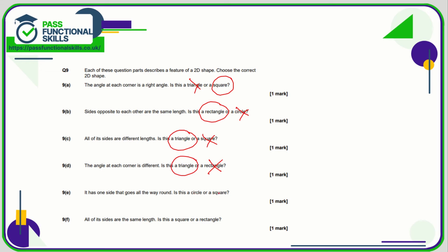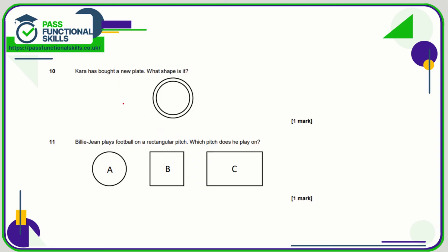It has one side that goes all the way around — circle or square? A square has four sides, so it's a circle. All sides are the same length — square or rectangle? A rectangle has two pairs of sides of different lengths, so this is a square. Question ten: a car has a new plate — what shape is it? We can clearly see it's a circle. Billy Jean placed a football on a rectangular pitch — that is pitch c.